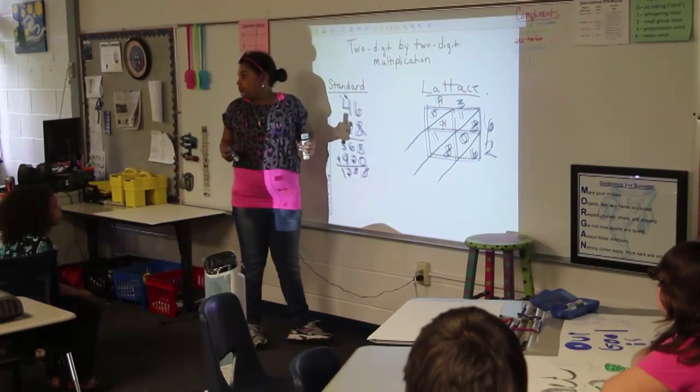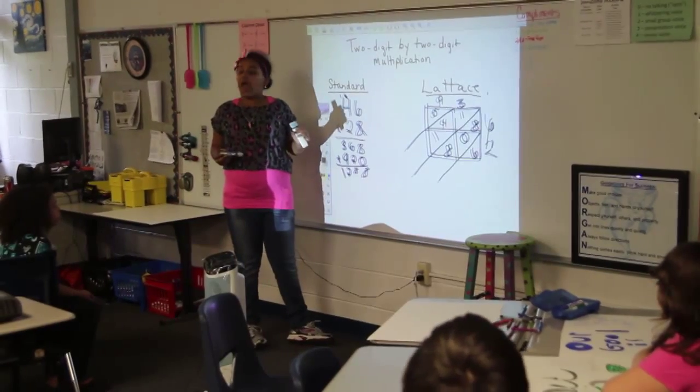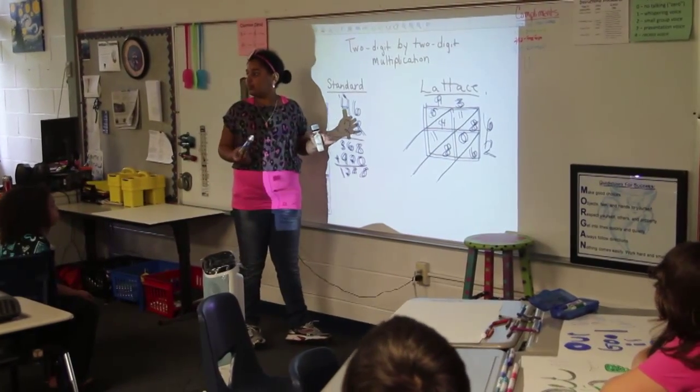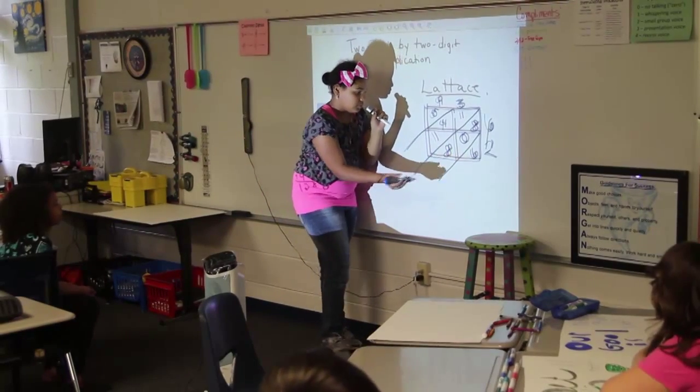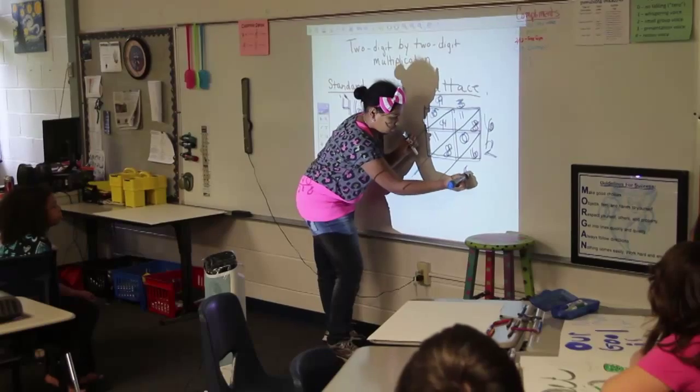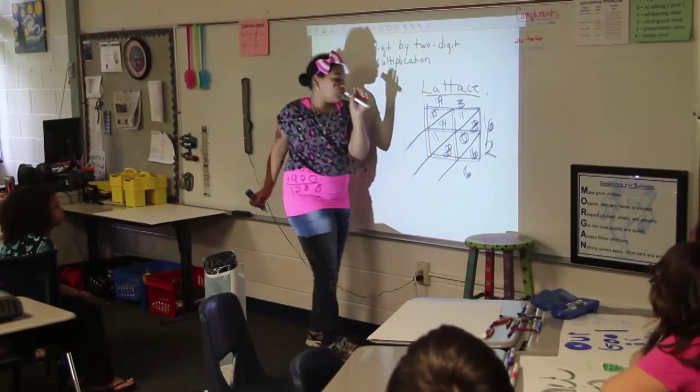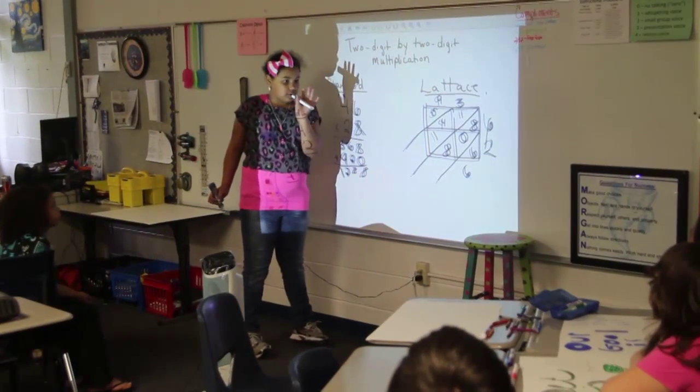Okay, now what do we do with the diagonals, class? Add! Add across the diagonals. Okay, so Lira, lead us in that. Six plus nothing equals? Six! Bring down the six, nothing to add it with. What's eight plus eight? Sixteen!